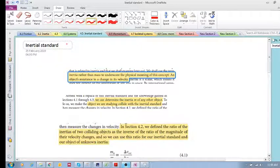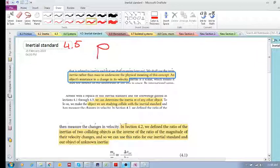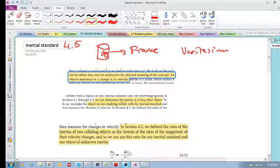Chapter 4.5 is on the inertial standard. What is the inertial standard? It is basically a cylinder that has a mass of one kilogram stored somewhere in France. You should go check out this channel called Veritasium by Derek Miller.